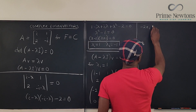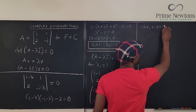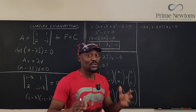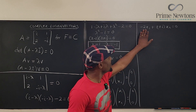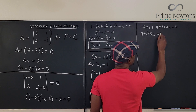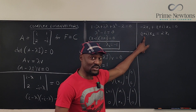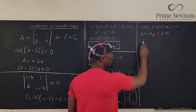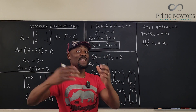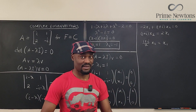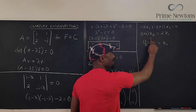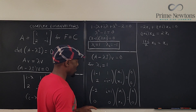After elimination we have: negative 2·x1 plus (1 plus i)·x2 equals zero. Moving the negative two term over: (1 plus i)·x2 equals 2·x1. Dividing both sides by two: x1 equals (1 plus i)/2 · x2. We're done once we have one variable in terms of the other — we've found our eigenvector relationship.